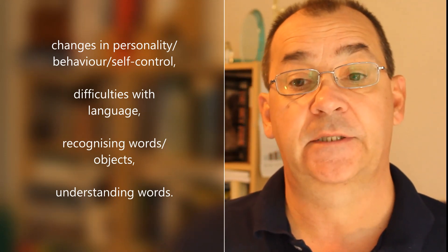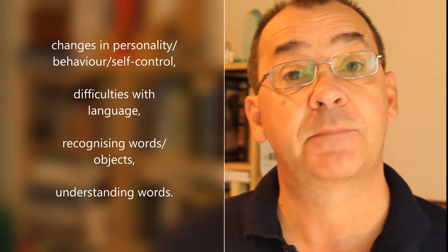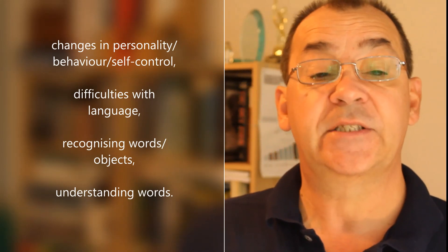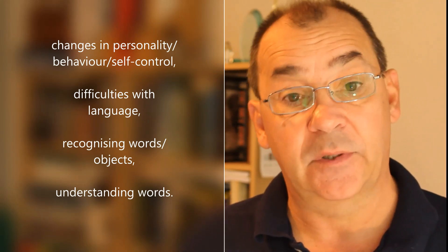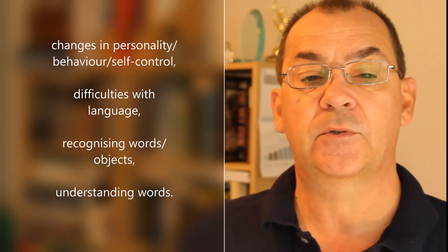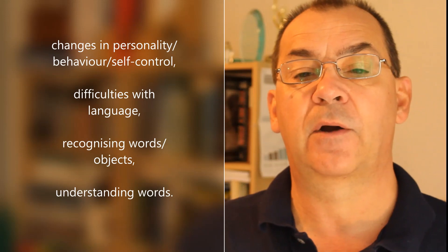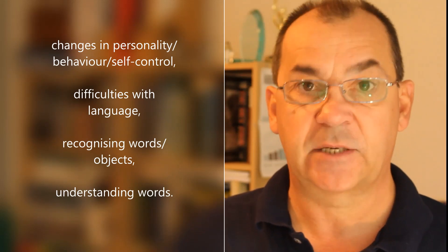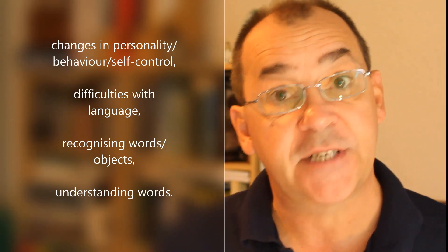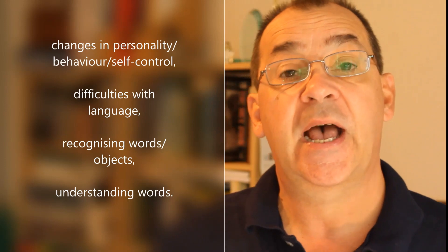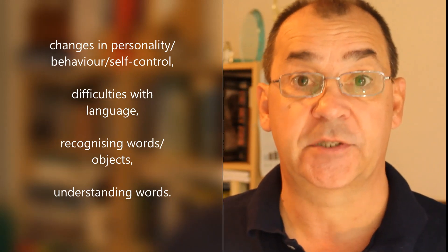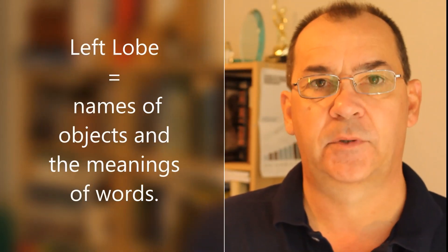Some of the hallmark symptoms of a frontotemporal dementia may include changes in personality, changes in behavior, changes in self-control, and difficulty with language. These difficulties can also include recognizing objects, understanding what objects are, understanding the meaning of words, and the formation of words when trying to speak.